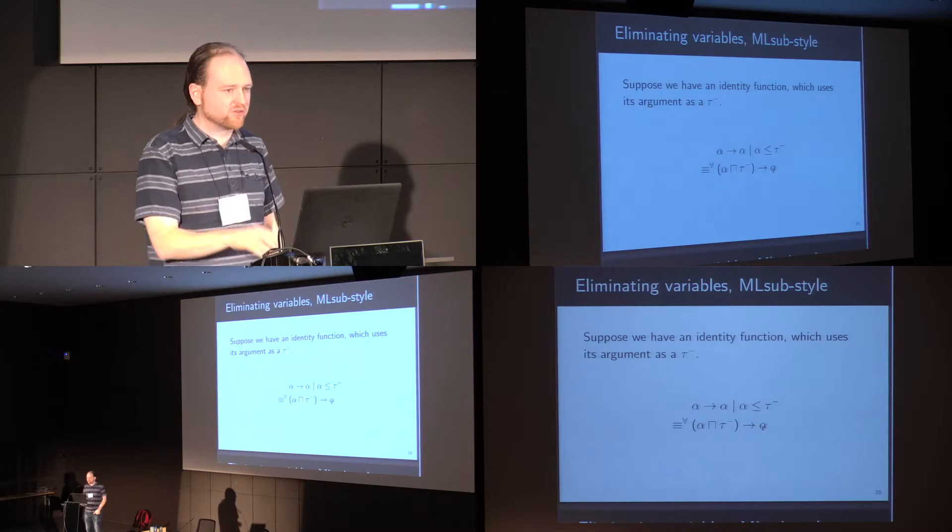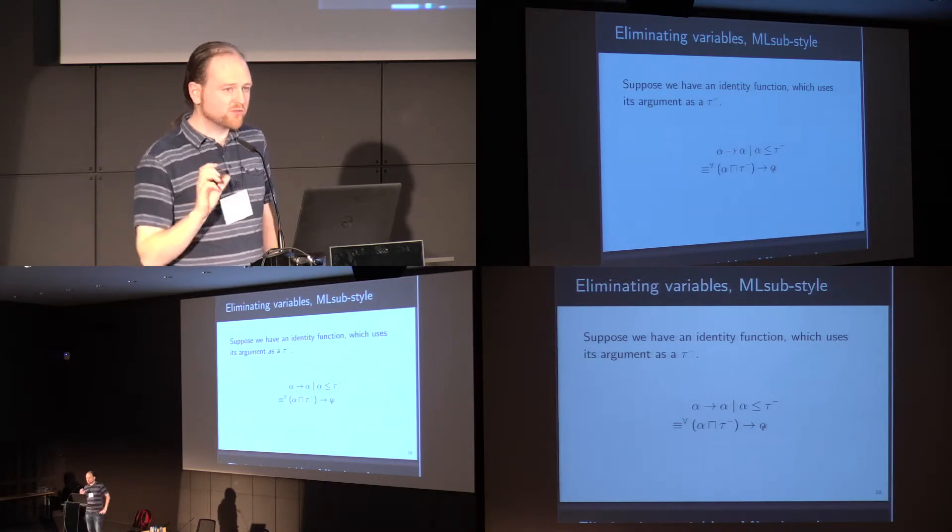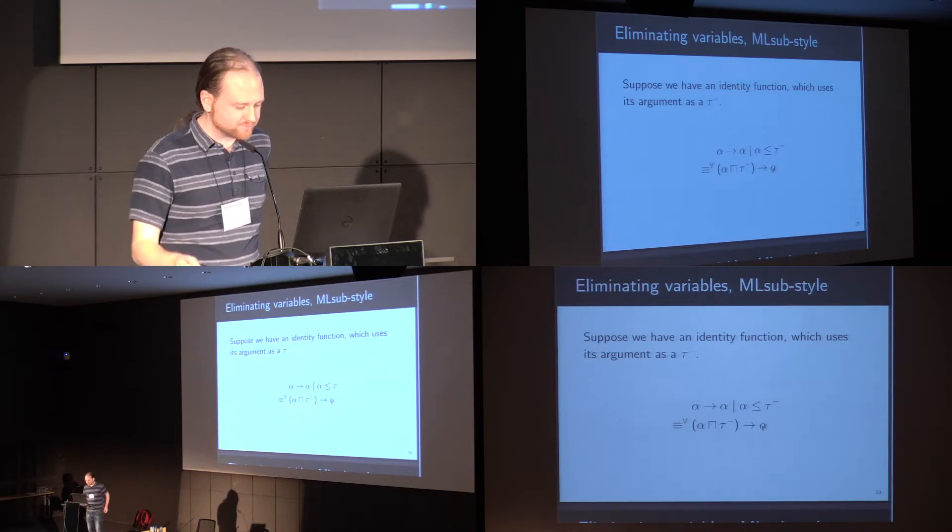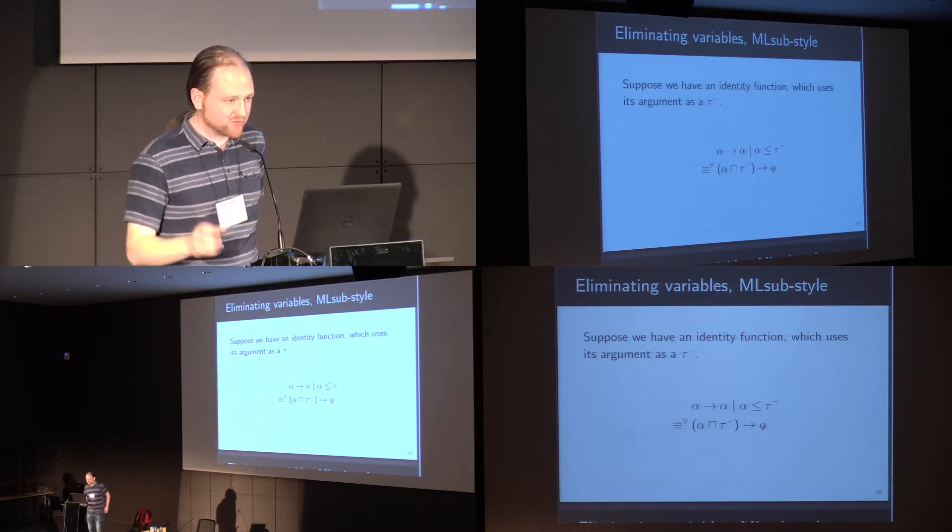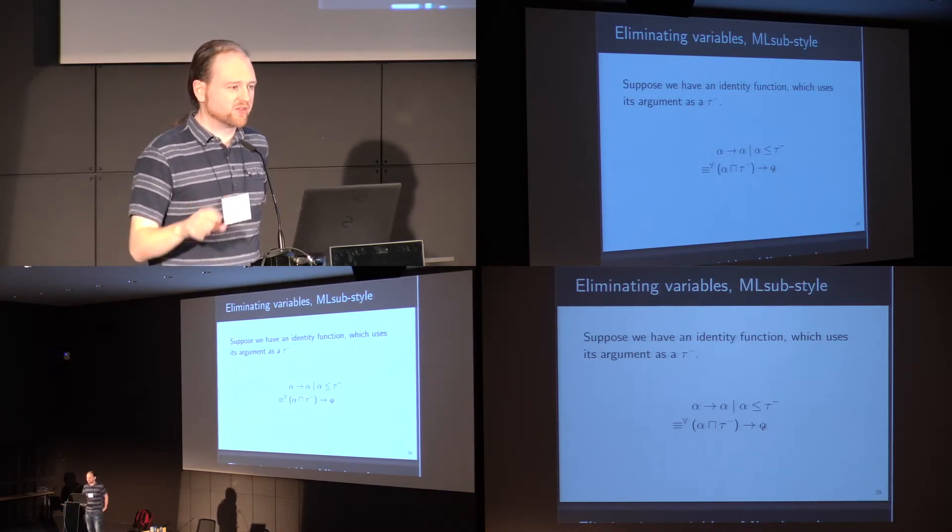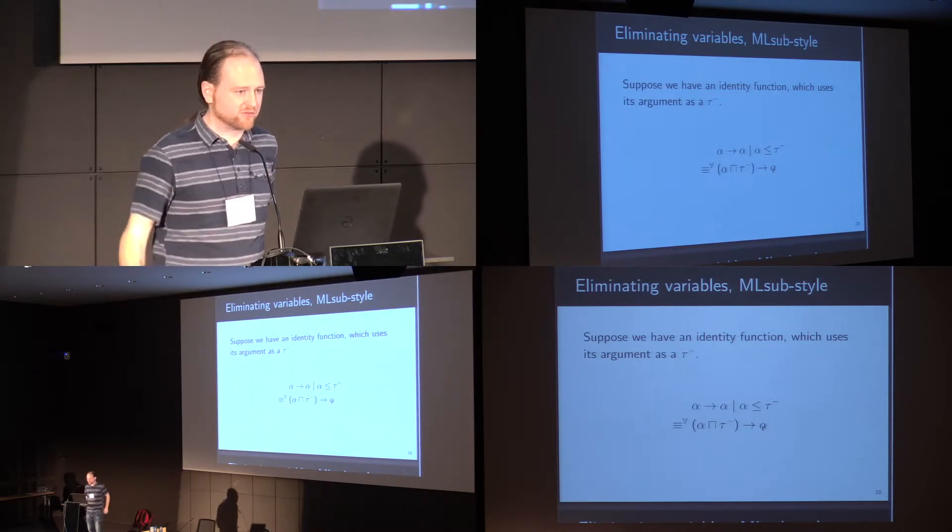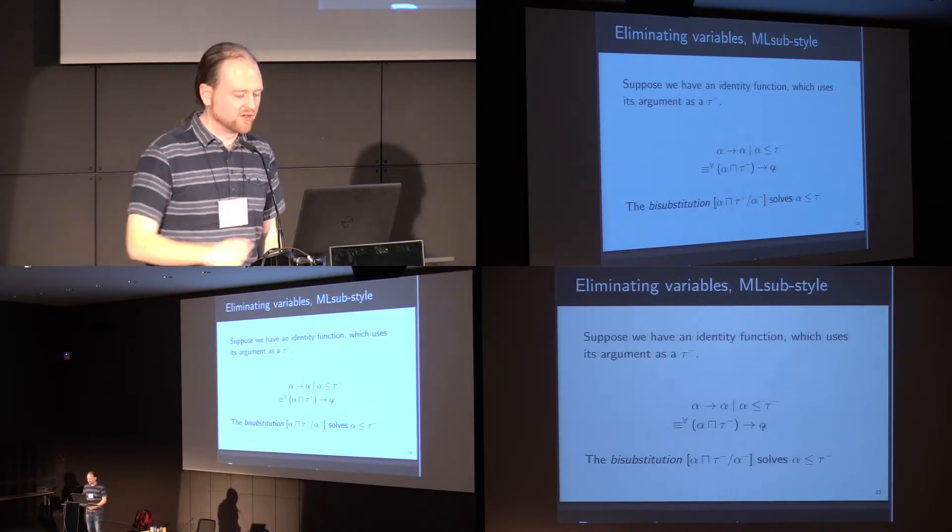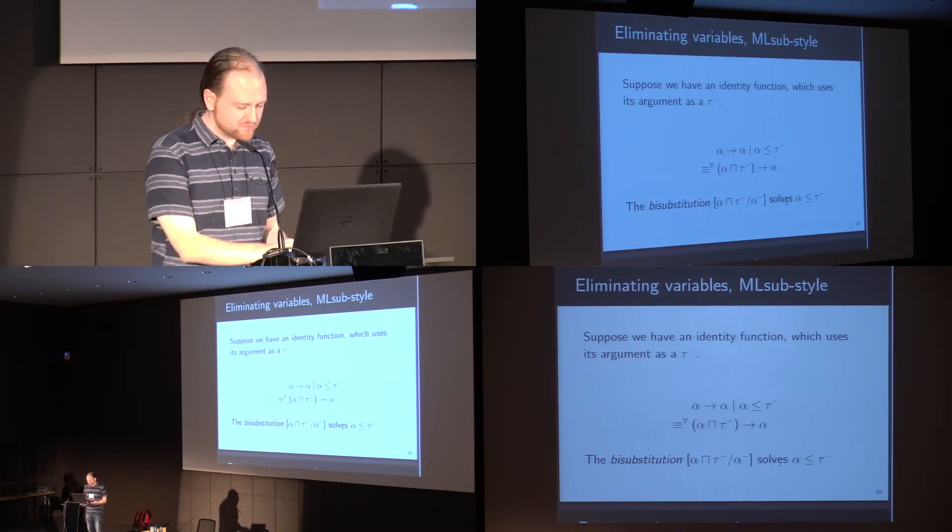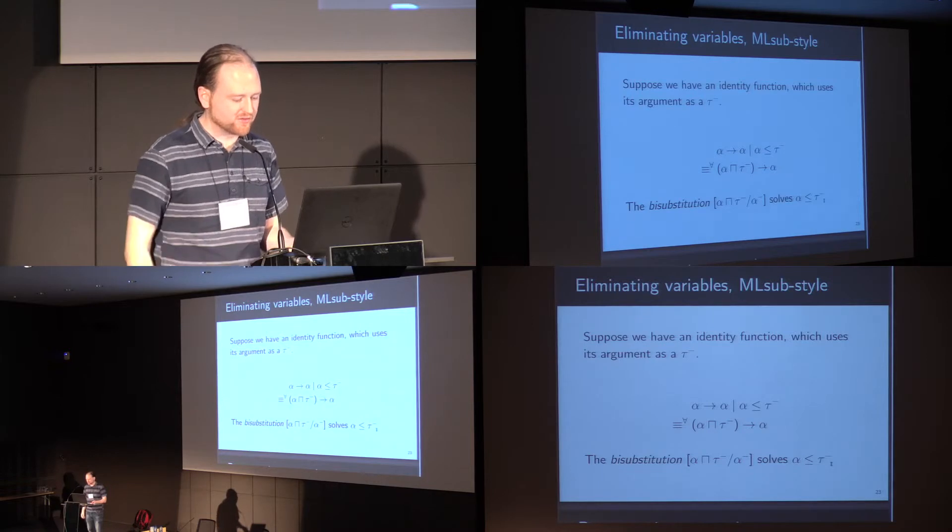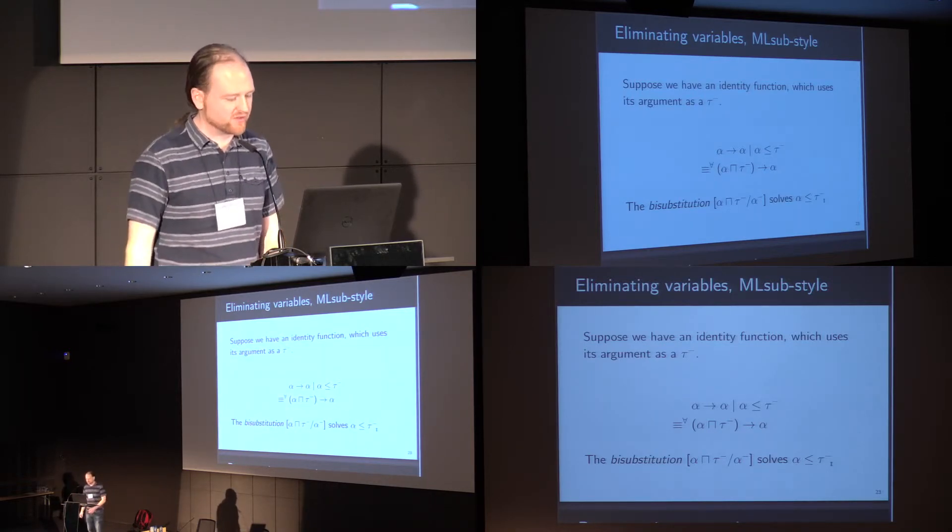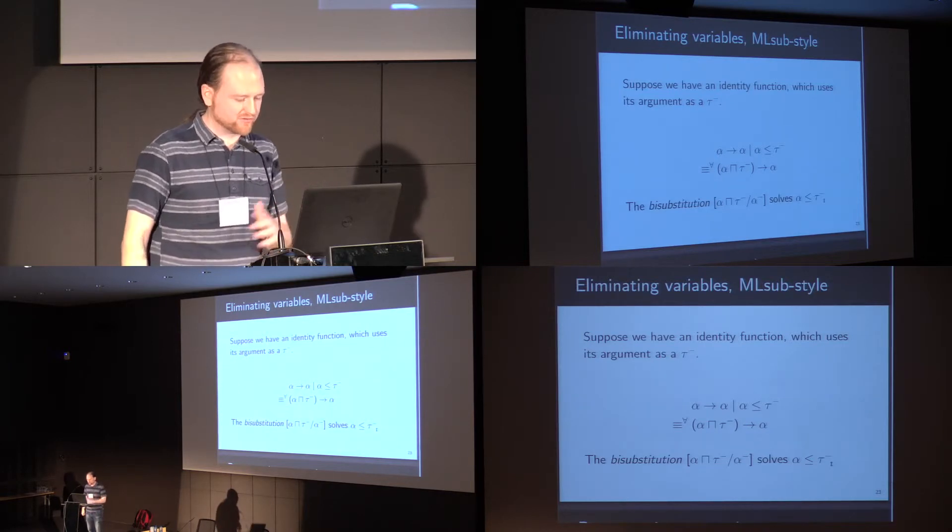So in ML-sub, we have to use something very similar to unification that I'm calling bi-unification, where the major difference is, instead of producing a single substitution that maps variables to types, it produces a substitution that maps variables to types differently according to polarity. So in this case, the solution alpha less than t-minus is the bi-substitution which maps all negative occurrences of alpha to the lower bound of alpha and t-minus.